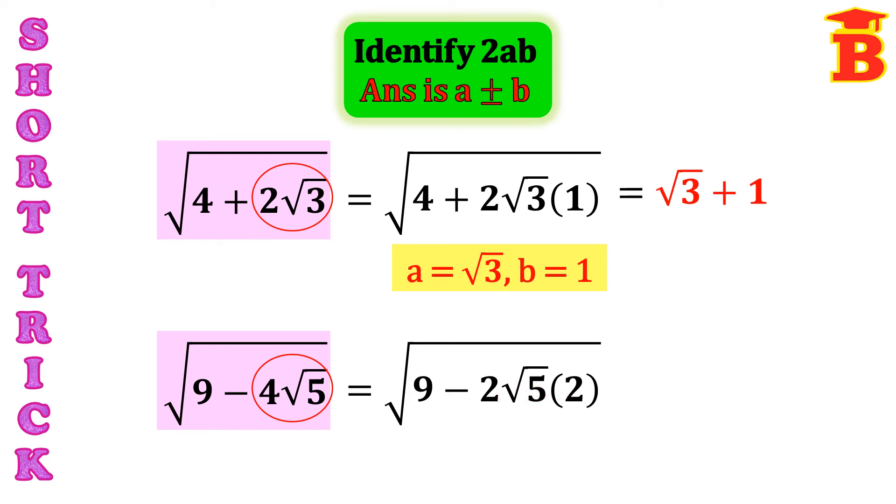Here, A equal to root 5. And B equal to 2. And here, the sign is minus. So, in the answer also, we have to put the same sign. So, the answer will be A minus B. That is, root 5 minus 2. So, this is the answer.